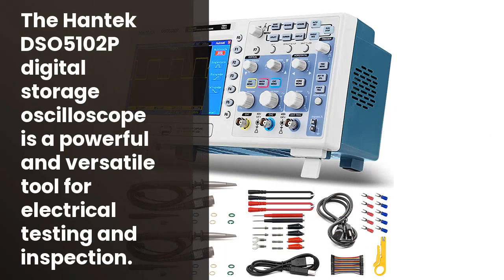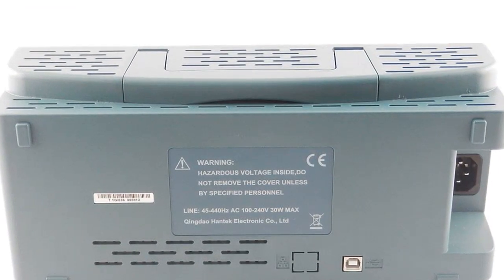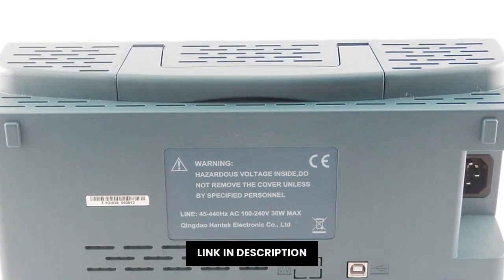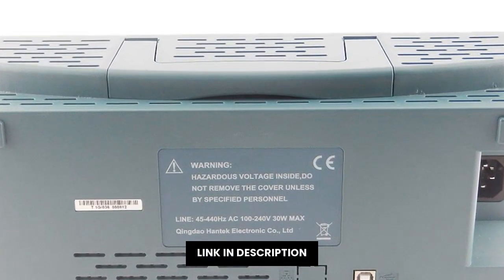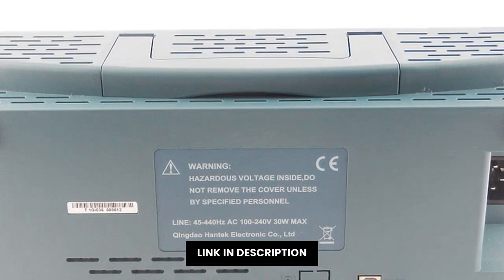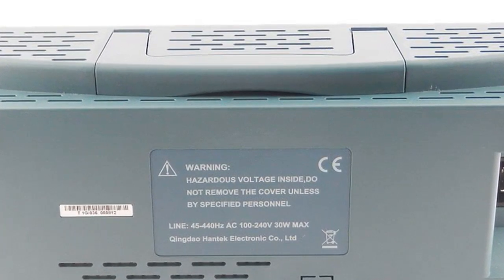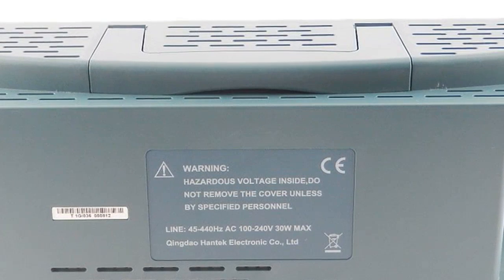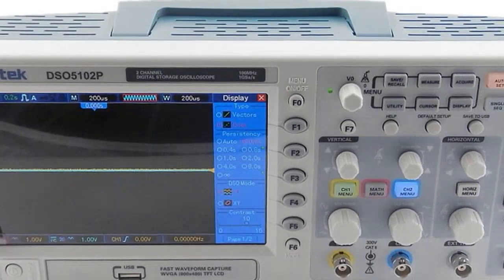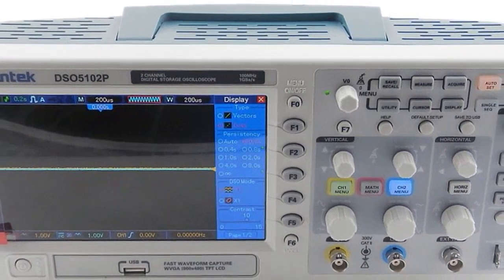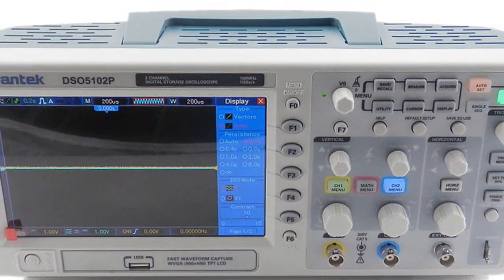Select a digital Hantek oscilloscope to perform tests, measurements and electrical inspections accurately. This USB oscilloscope 100MHz 1GSa/s 40K is suitable for performing various types of tests, including current tests, resistance tests and electrical tests. You can also use it to measure the correct characteristics of electronic circuits.